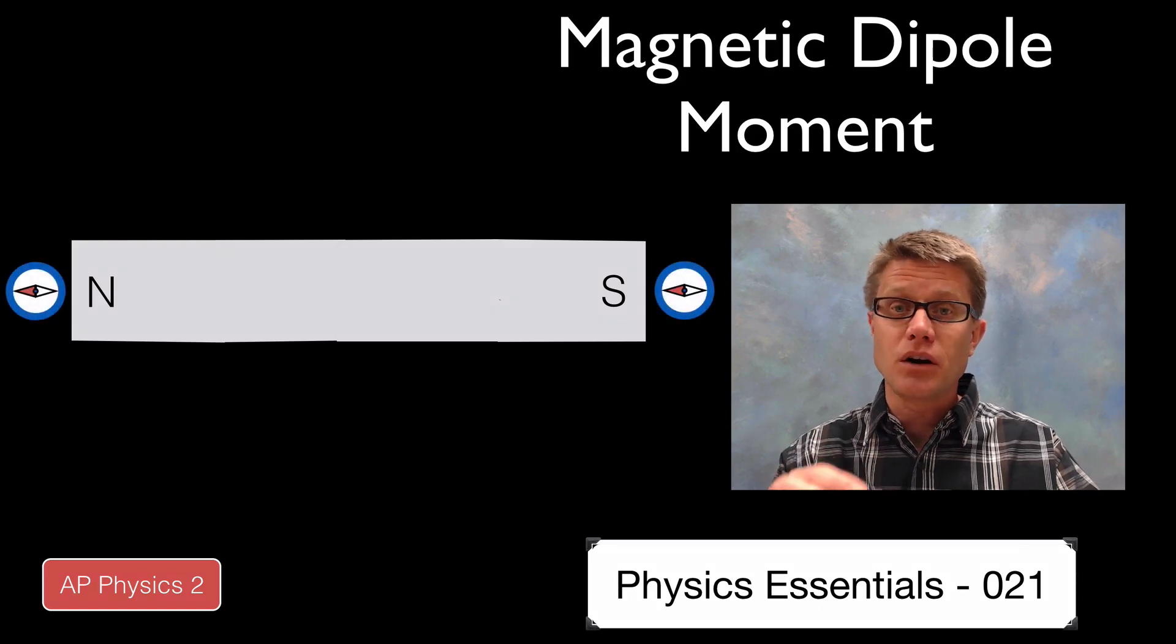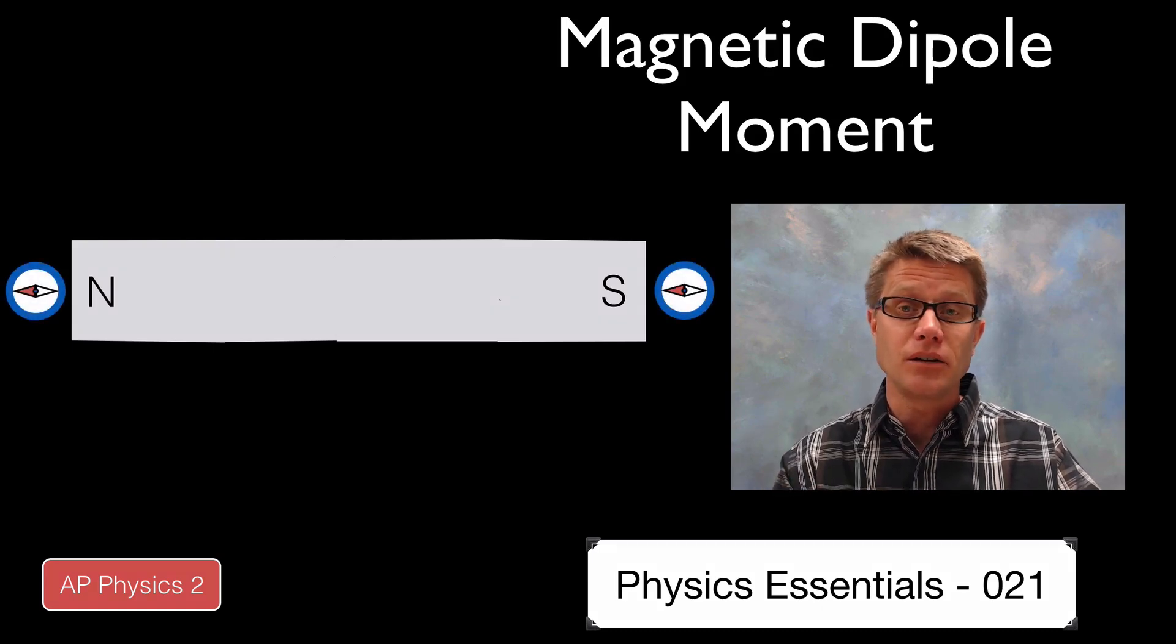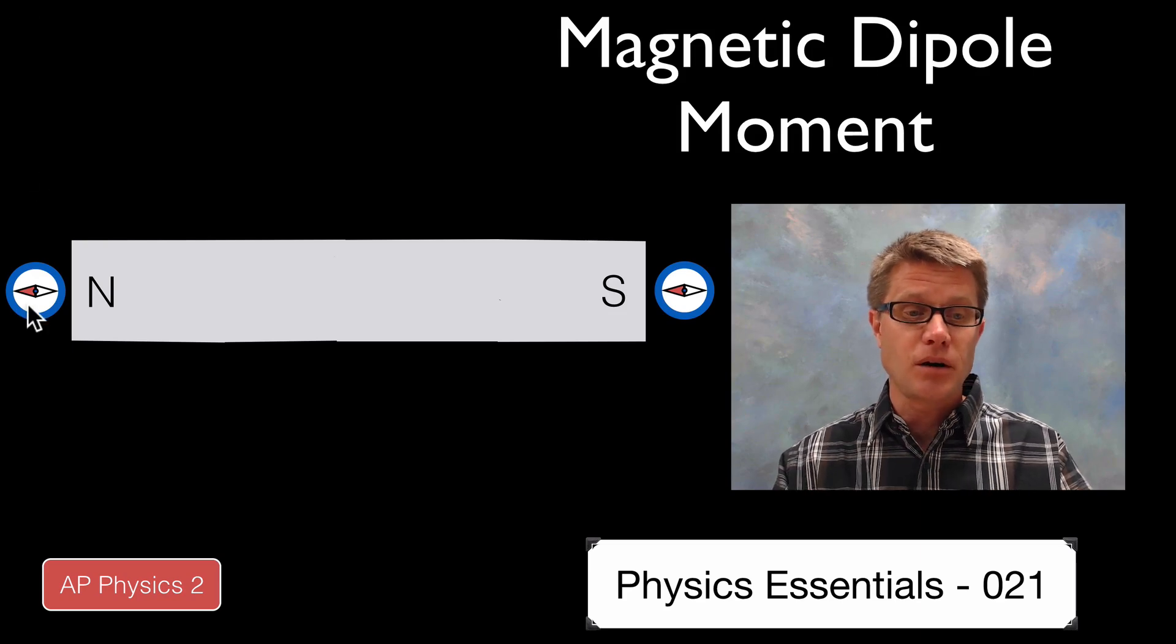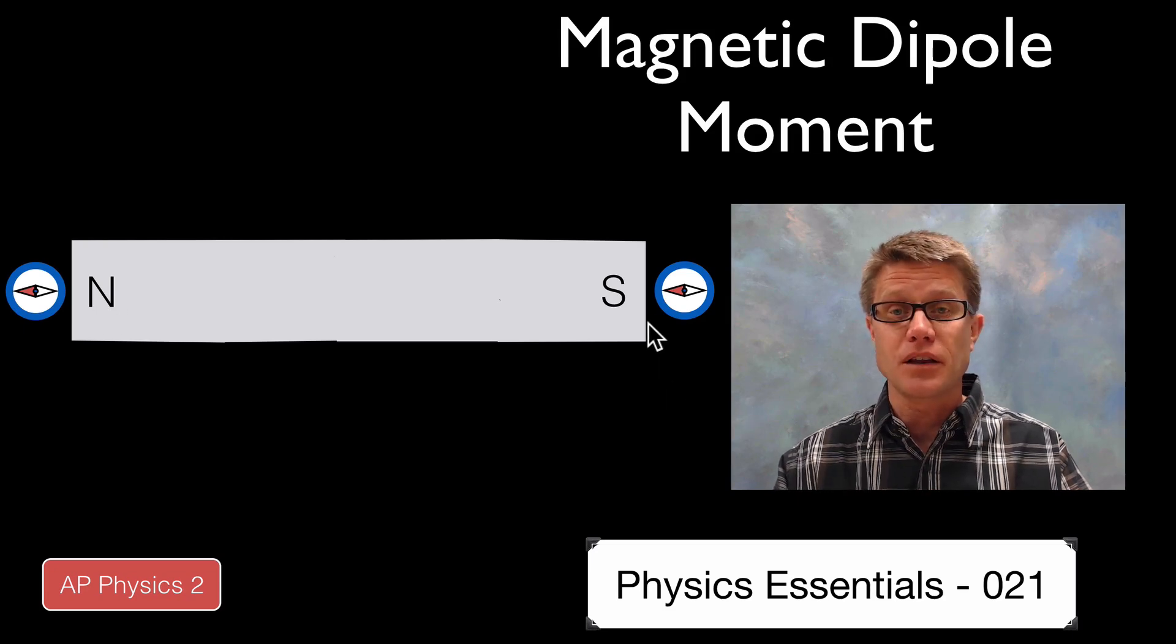A compass is essentially a small floating magnet on a needle. If we put this next to the bar magnet you can see that the south side of the compass is facing the north side of the magnet and vice versa down here on the other side of the magnet. So we would say it is definitely magnetized.